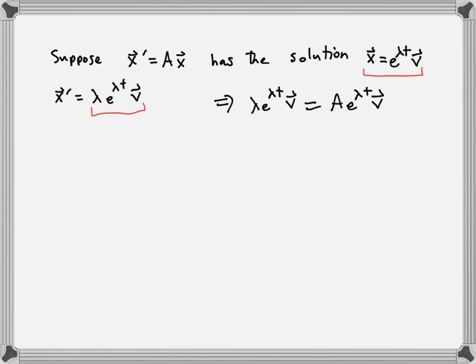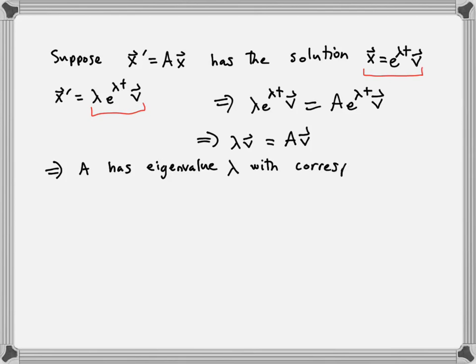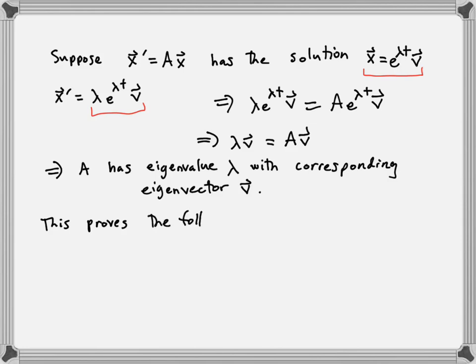The equation λv = Av means exactly that A has eigenvalue λ with corresponding eigenvector v. This proves the following theorem.